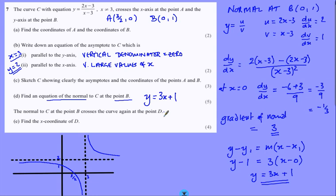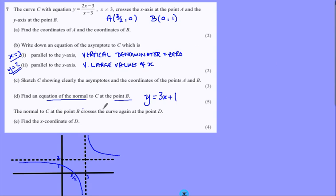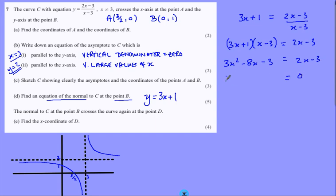And finally, crosses the curve again. We need to find its coordinates. I think I'm going to need more room. Let me eliminate all that hard work for a second. The normal has got to equal the curve, the simultaneous equation. We've got ourselves a quadratic. Factorise.